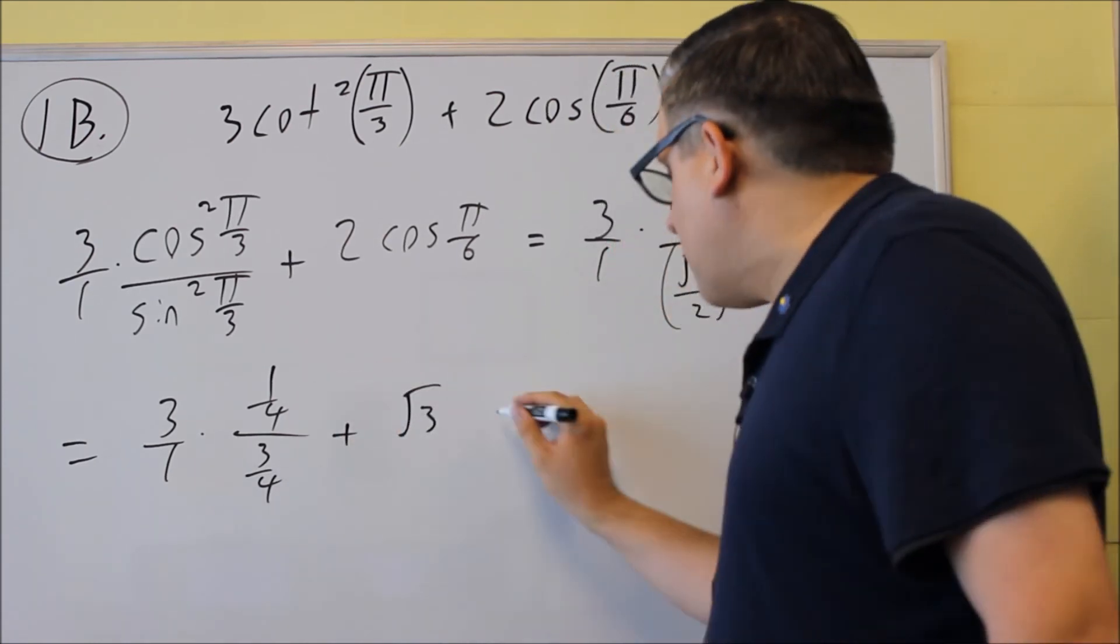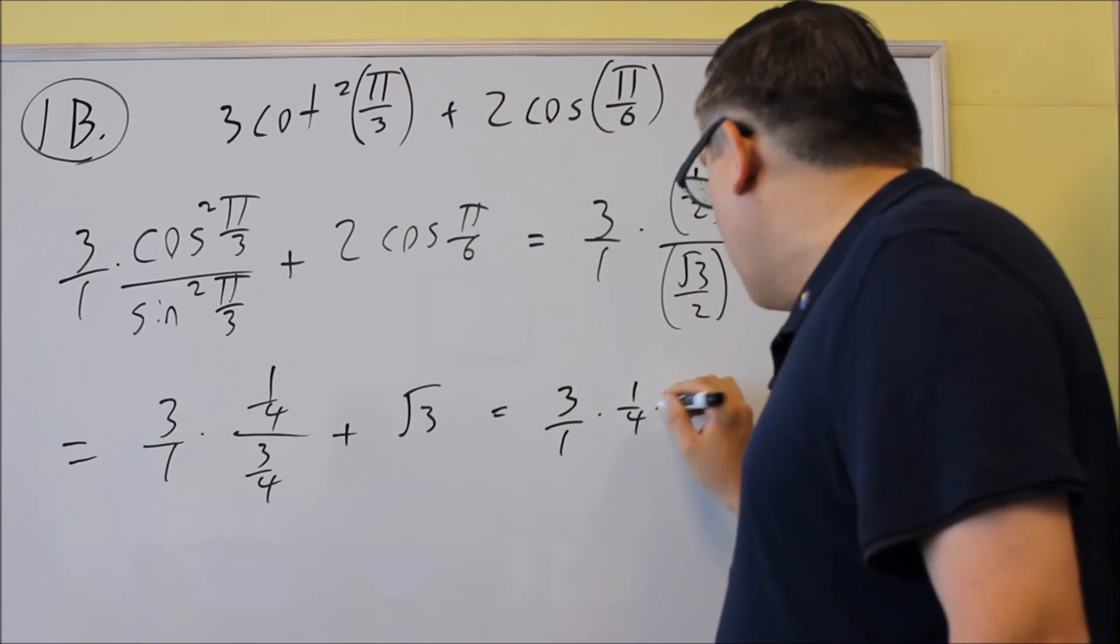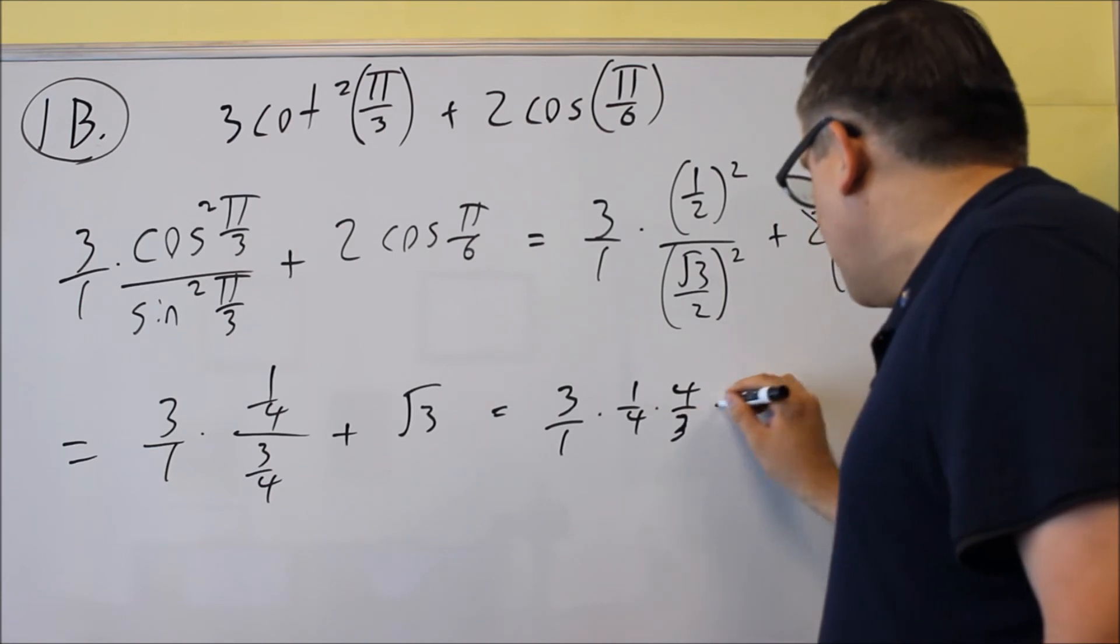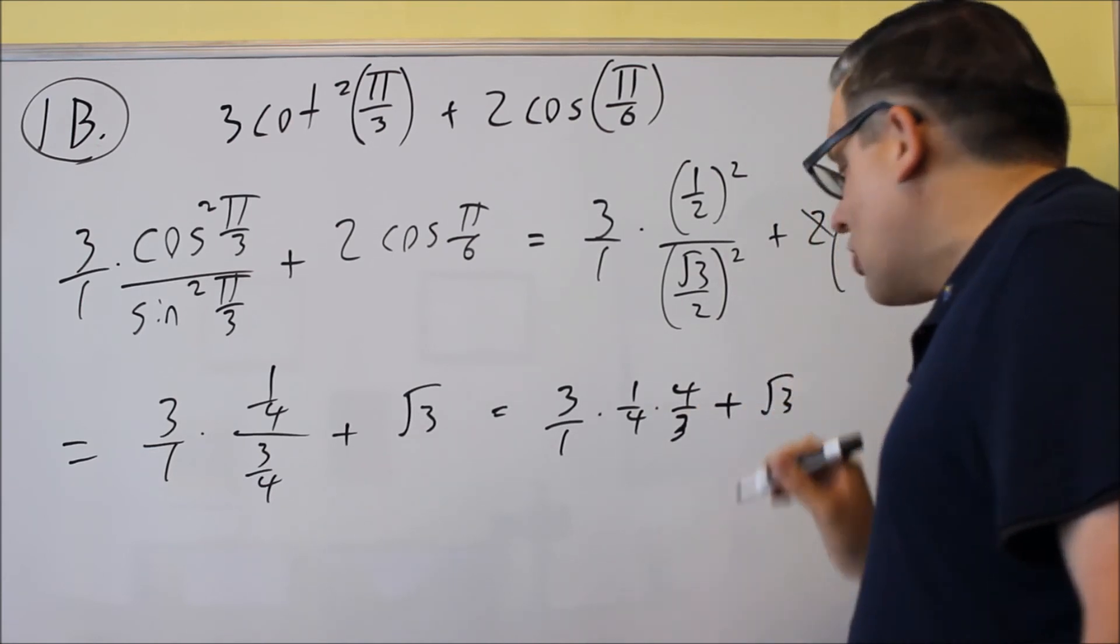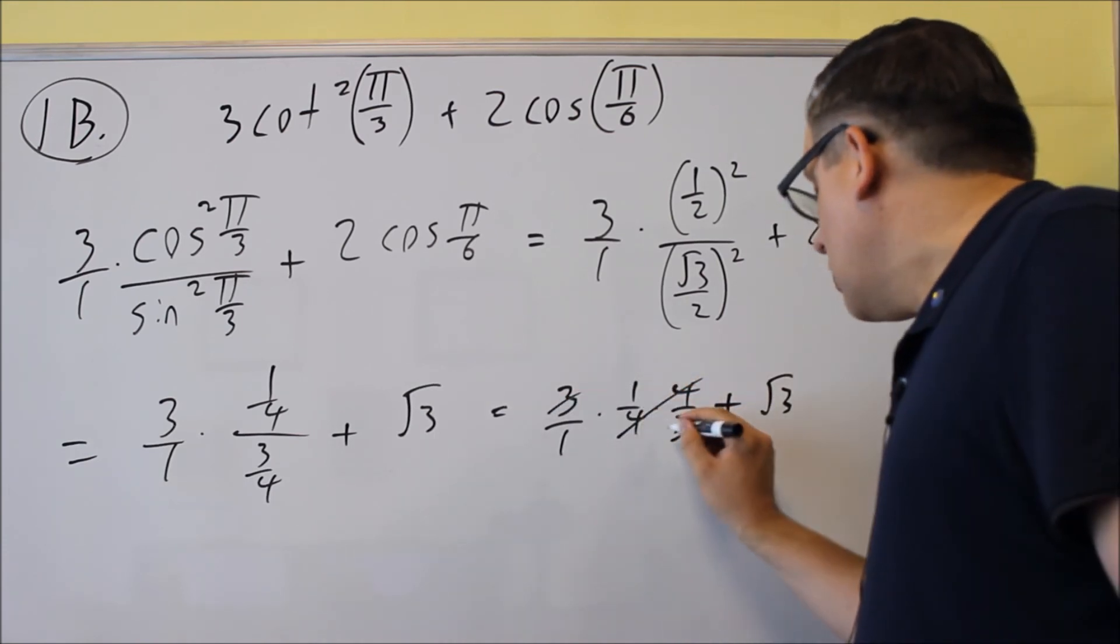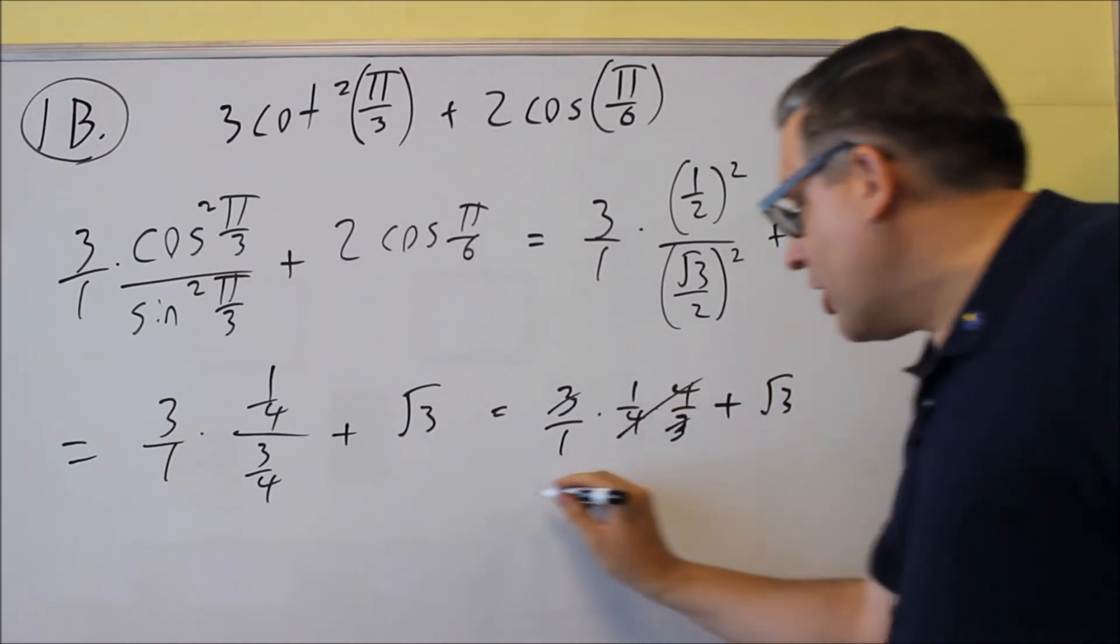We're going to flip and multiply these fractions. So I have 3 over 1 times, I have a 1 fourth, if I flip the bottom fraction it's going to become 4 over 3. I still have the plus square root of 3 here. The 4's are going to cancel out and the 3's are going to cancel out but we still have 1's left over on that.